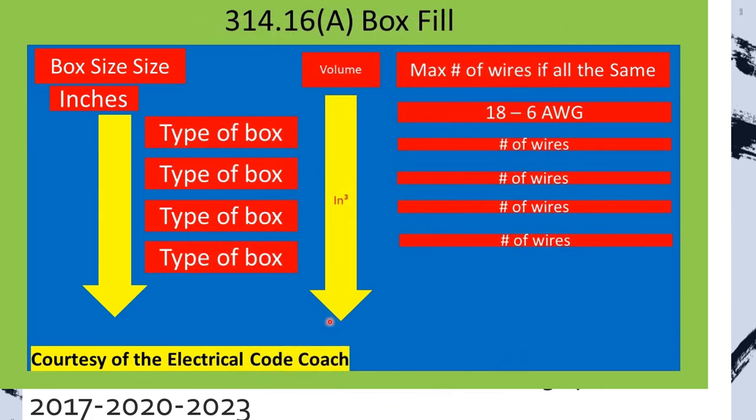The next column that we need to pay attention to is this middle one right here. Now, in the NEC, it actually says a minimum volume, which is kind of deceptive to the installer because it's actually your maximum volume that you're allowed to fill that box. And it's listed in cubic inches.